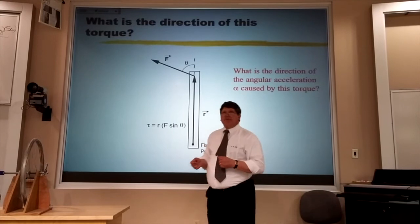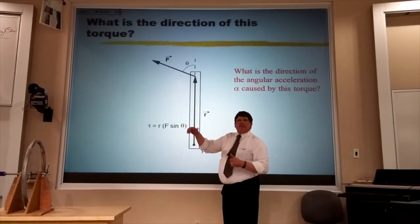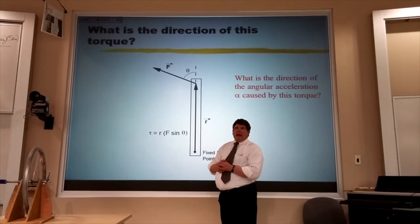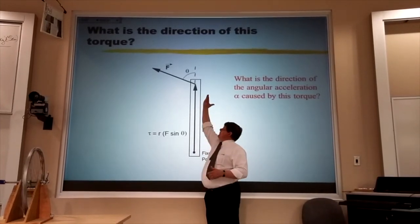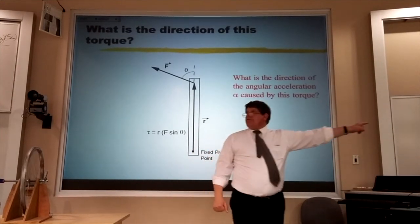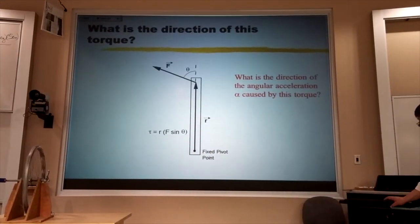And if it's spinning up from rest, it's speeding up. So what direction would the alpha point if the omega's out and it's speeding up? Out. And sure enough, this torque is out. It's causing the alpha.